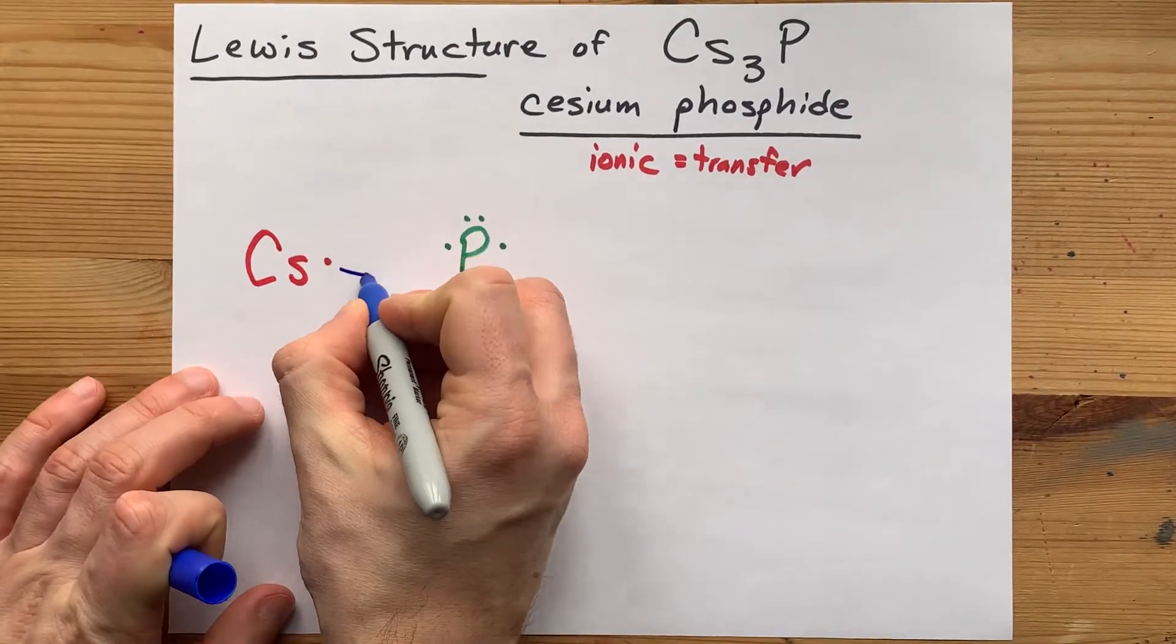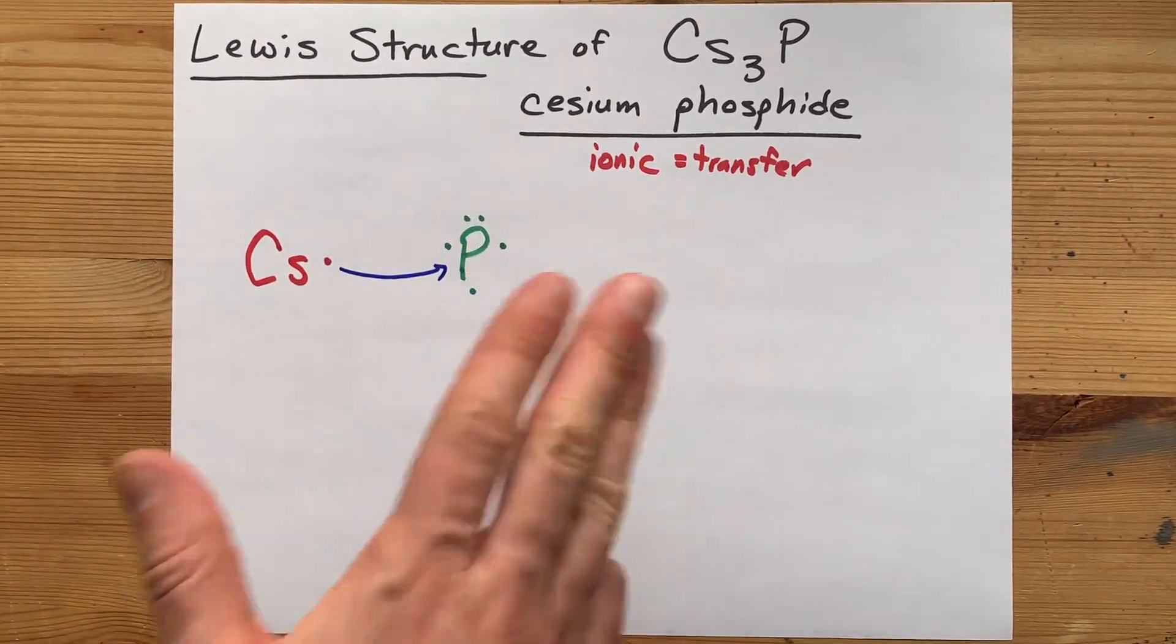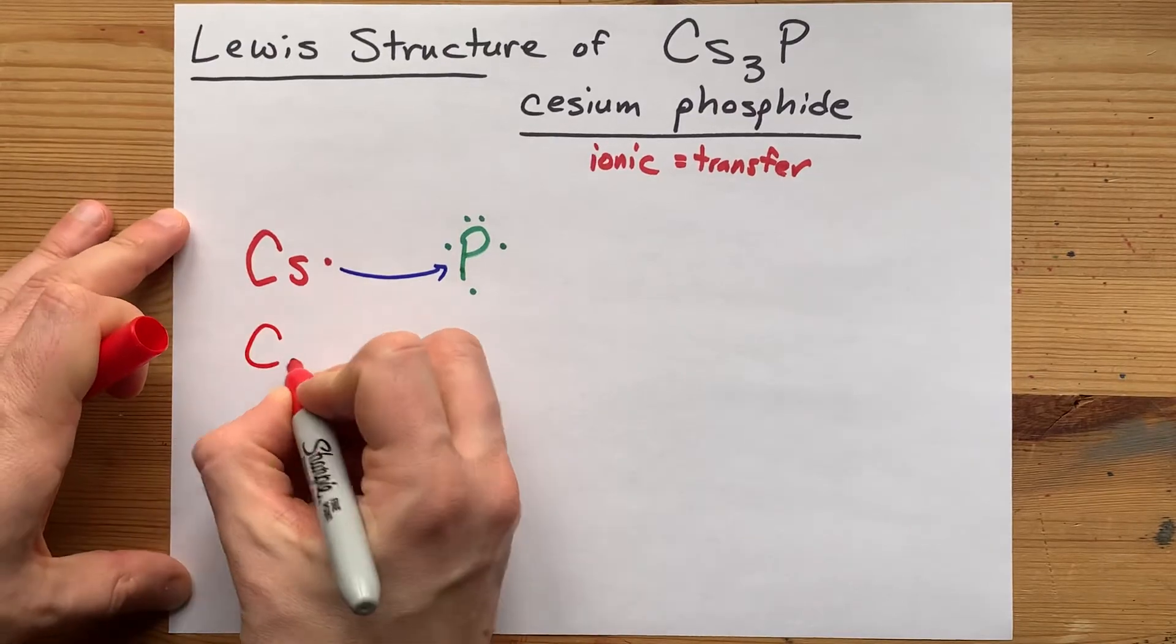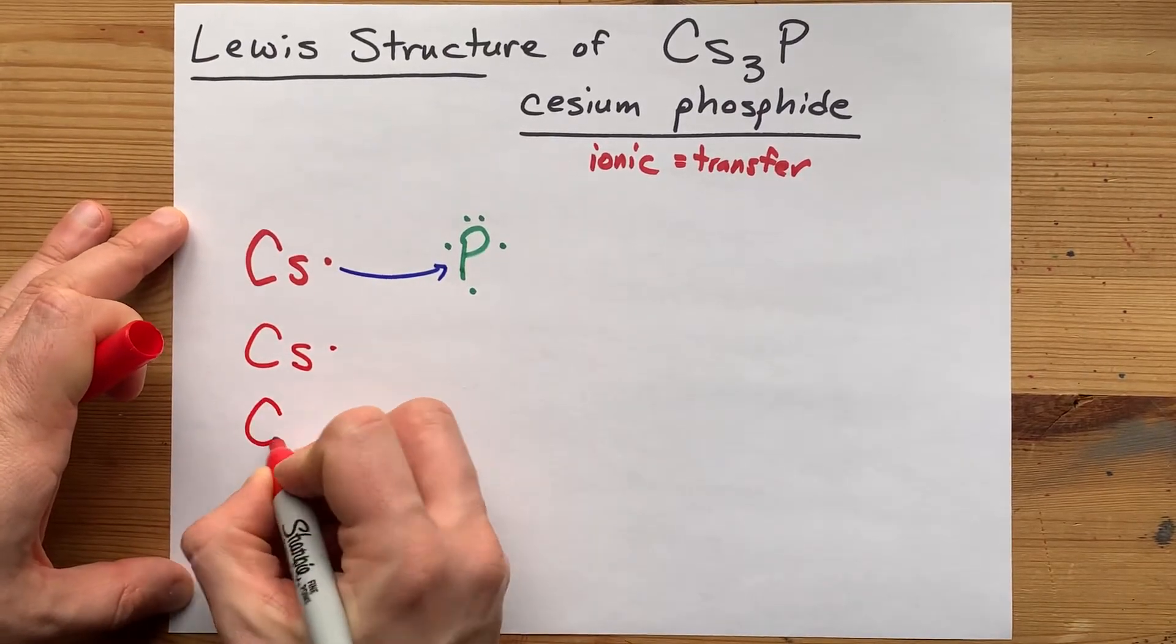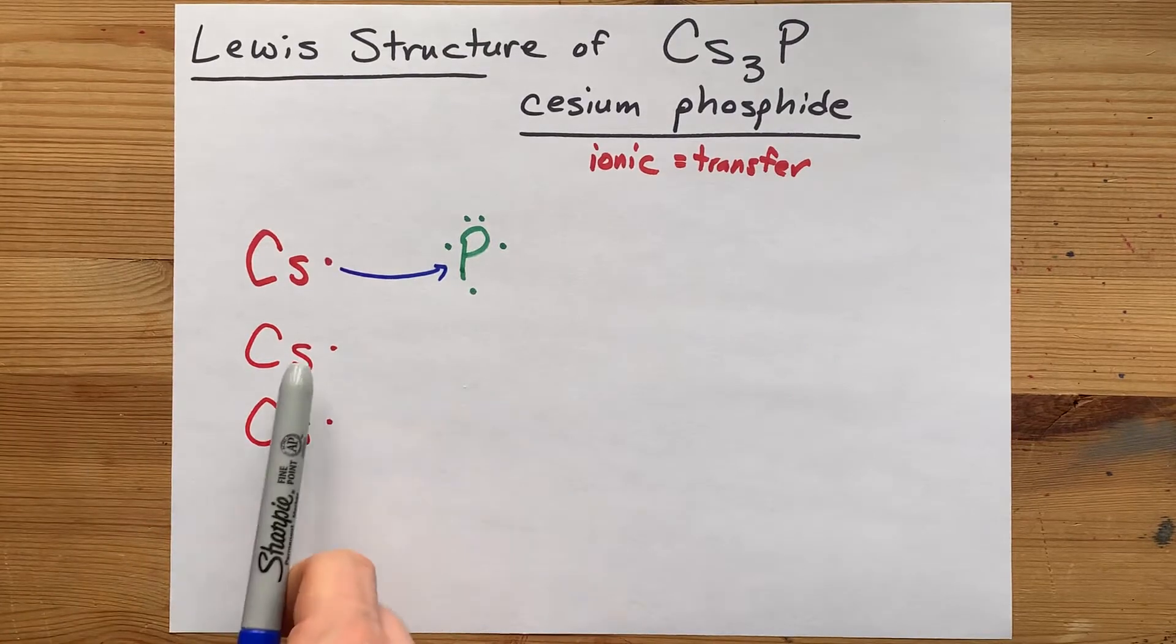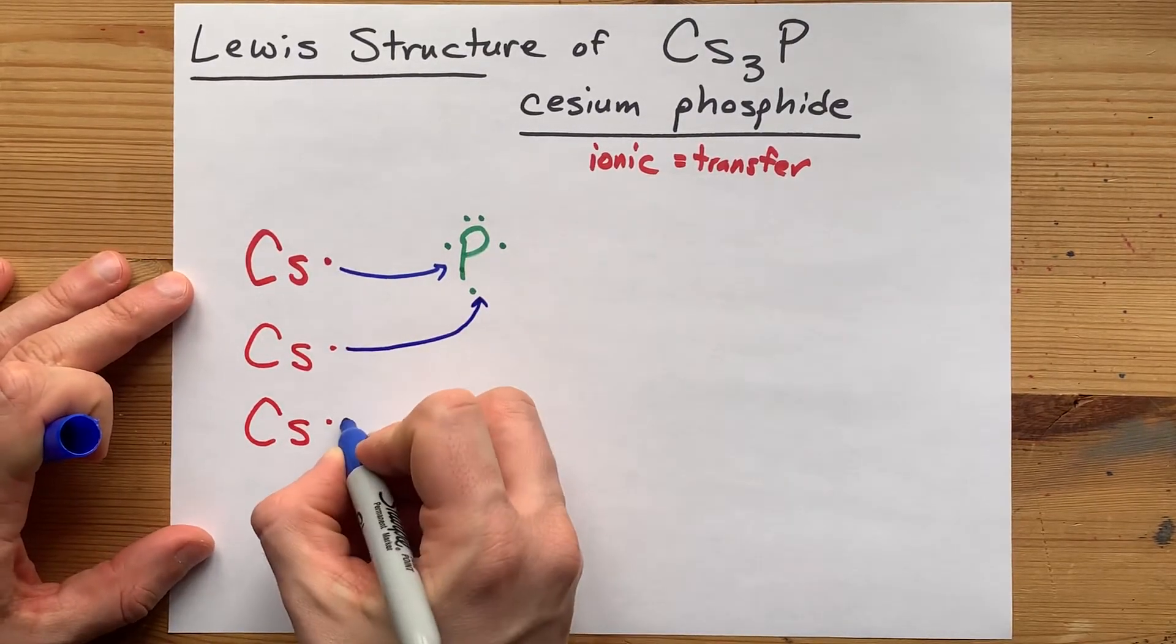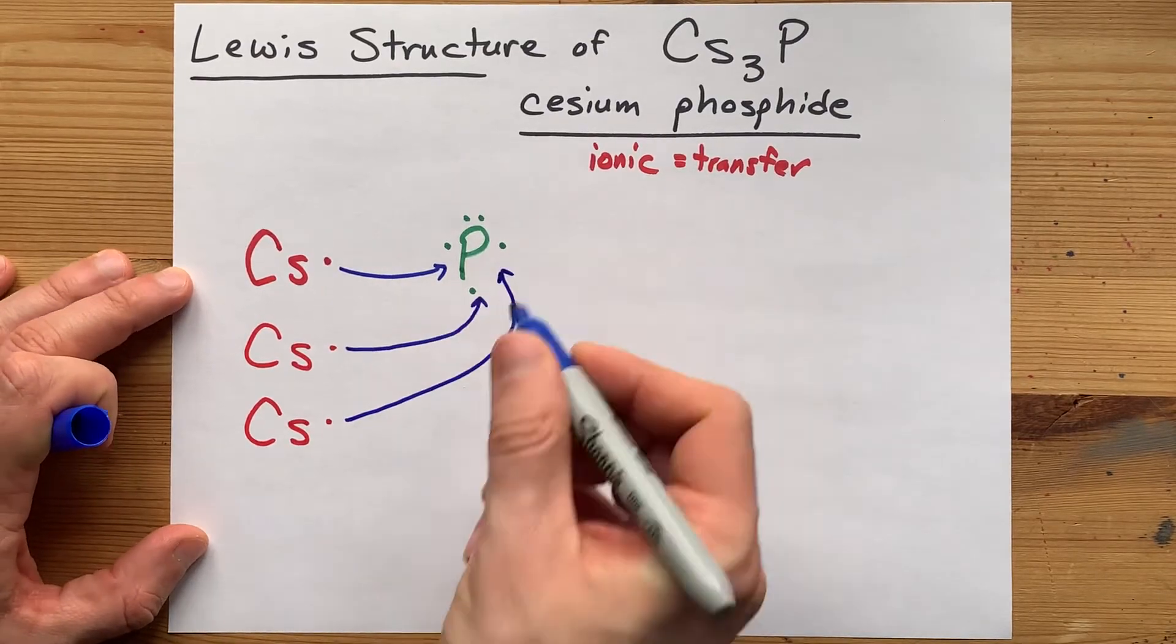Well, it can get one from this cesium, but where is it going to get the extra two? The only answer is you need more cesiums to make it happen. Draw yourself two more. Show this cesium giving its electron away, and this cesium giving its electron away.